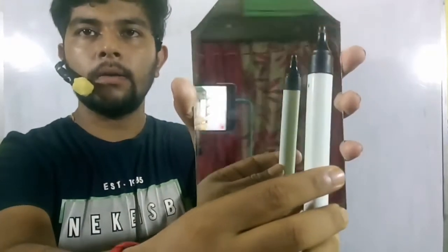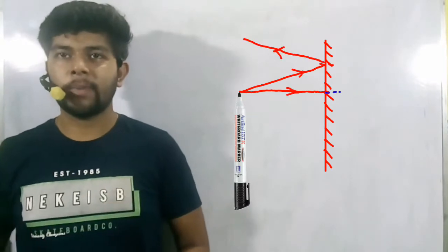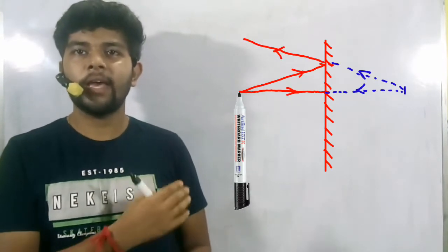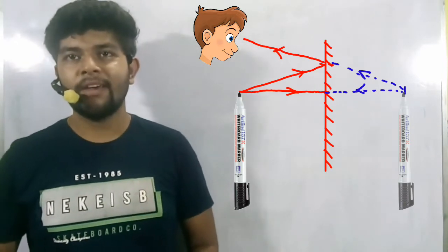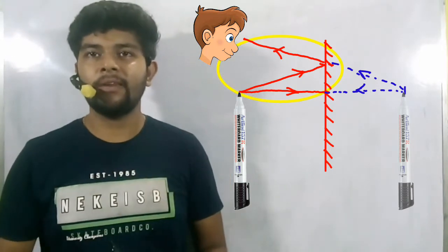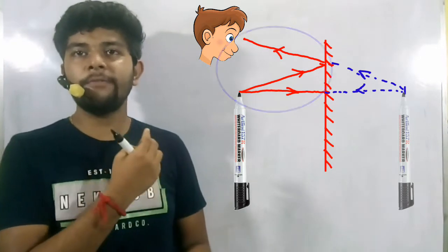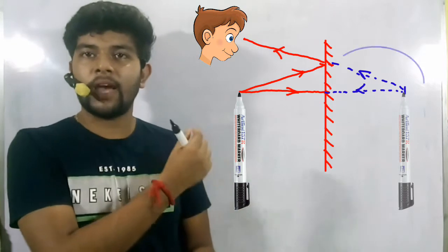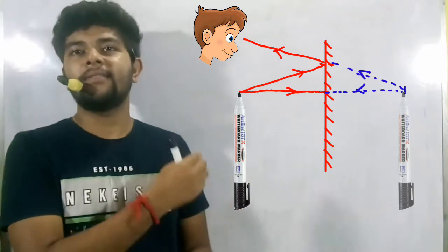If we bring the pen in front of the mirror, the image of the pen is formed behind the mirror. Let's understand the theory of it. This is a plane mirror and this is the marker pen. Light falls on the marker pen and emits from the marker pen, then the light falls on the plane mirror and reflects back to our eyes. That is how we can see the image of the pen behind the mirror, because the light rays coming from the pen are diverging. If we trace those diverging rays behind the mirror, they will meet again at a point behind the mirror.